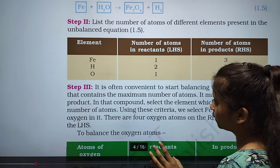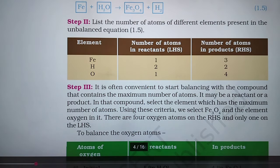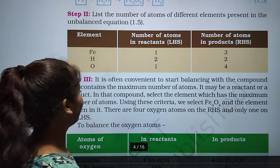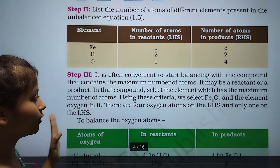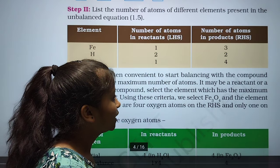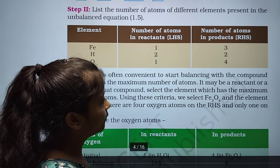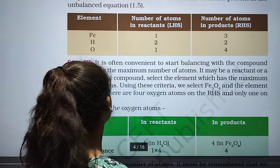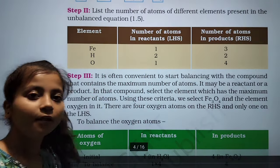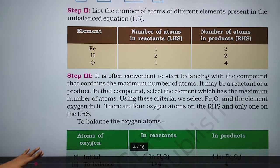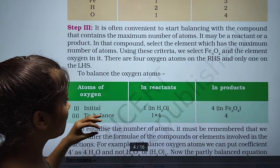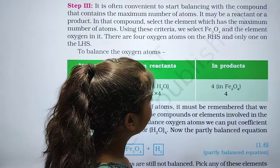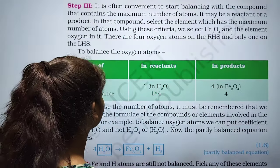Step 3: start balancing with the compound that contains the maximum number of atoms. Select the element which has the maximum number of atoms. Using this criterion, we select Fe₃O₄ — there are 4 oxygen atoms on the LHS but only 1 in H₂O on the RHS. So we need to balance the oxygen atoms first. We multiply H₂O by 4 to get 4 oxygen atoms.